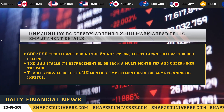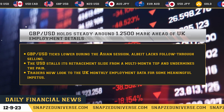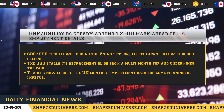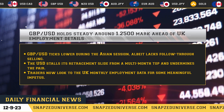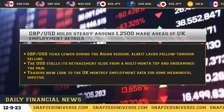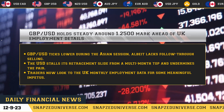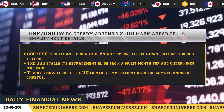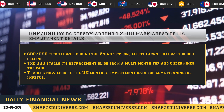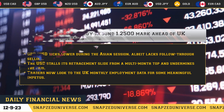GBP/USD holds steady around the 1.500 mark ahead of UK employment details. GBP/USD ticked lower during the Asian session, albeit lacking follow-through selling. The USD stalls its retracement slide from a multi-month top and undermines the pair. Traders now look to the UK monthly employment data for some meaningful impetus.